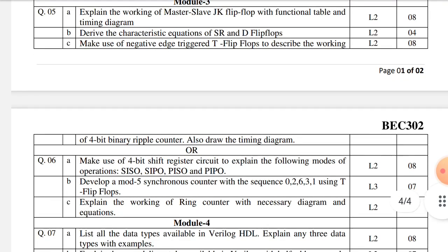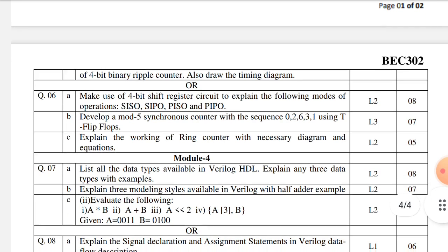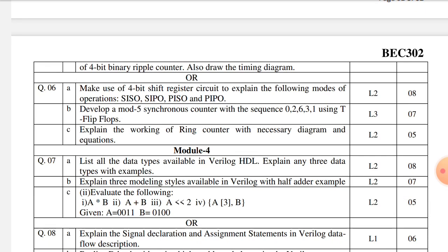In the sixth question, they have given the 4-bit shift register circuit. Next, you should explain the following modes: SISO, SIPO, PISO, and PIPO.